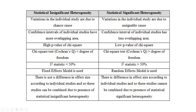In the case of insignificant heterogeneity, our interpretation will be that there is no significant difference in the effect size according to individual studies, so the studies can be combined and we can come to a common consensus. In the case of significant heterogeneity, there is a difference in effect size according to individual studies, and so the studies cannot be combined due to the presence of statistically significant heterogeneity.